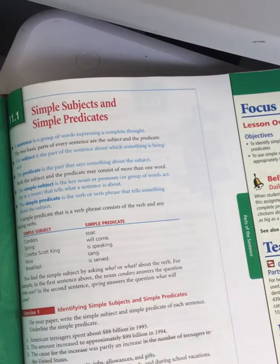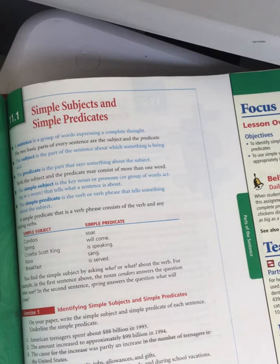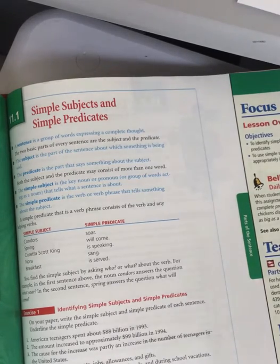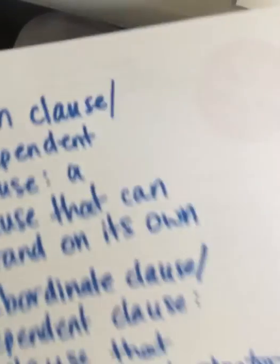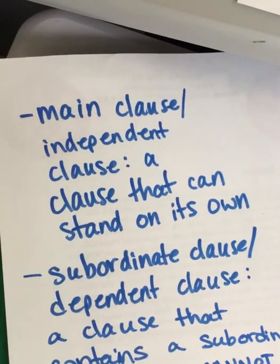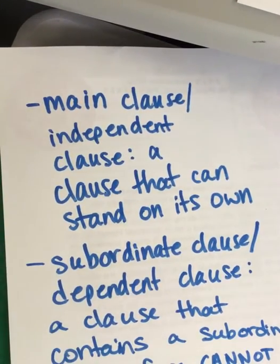Today we are going to go back to what we started talking about on Thursday. We're on simple subjects and simple predicates. So if you will look at your yellow note card and review a little bit of what we talked about on Thursday, because it's been a while.